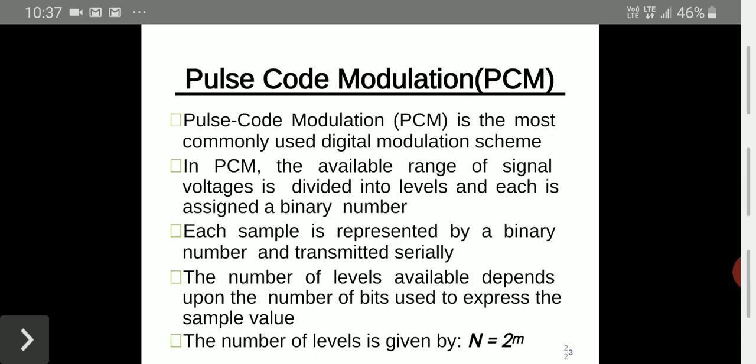In PCM, the available range of the signal voltage is divided into levels, and each level is assigned a binary number — zero or one. Each sample is represented by a binary number and transmitted serially, meaning one by one. The number of levels depends on the number of bits used to express the sample value, given as N = 2^m.